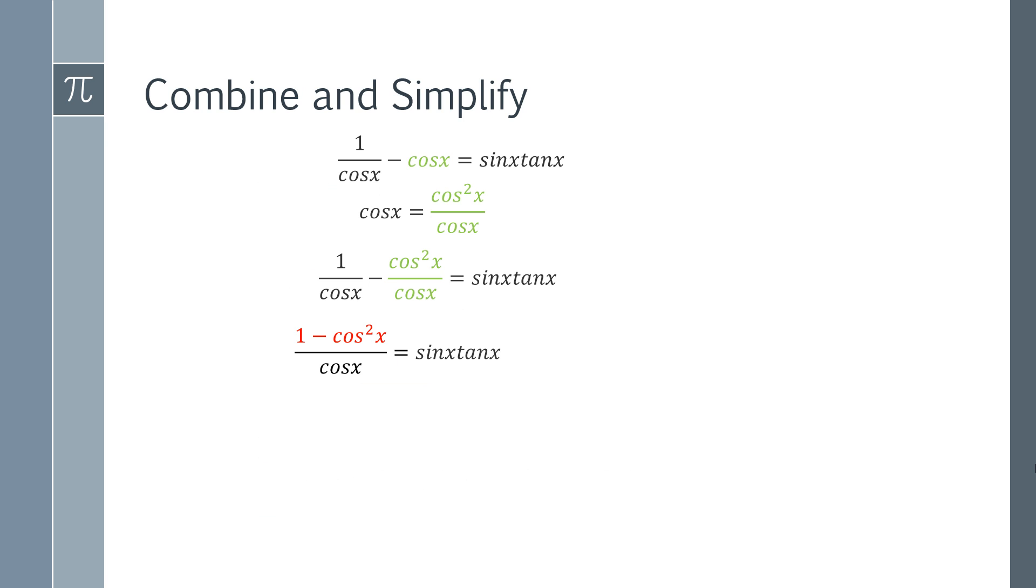So we end up with 1 minus cos squared x on the top. And if you're really thinking, you might recognize 1 minus cos squared x from somewhere else.